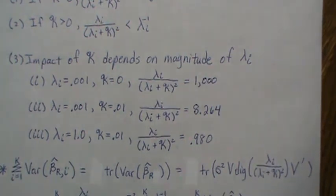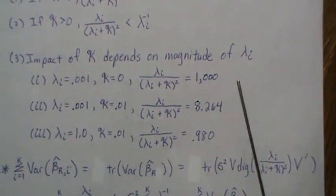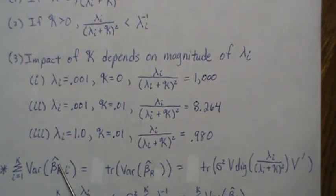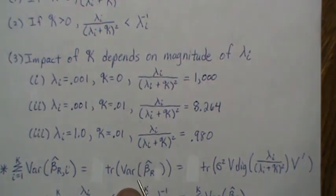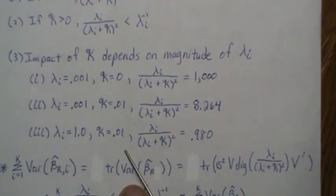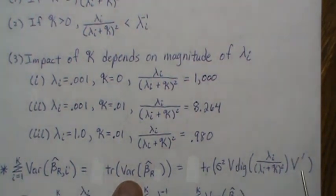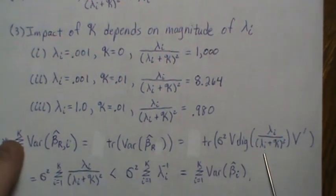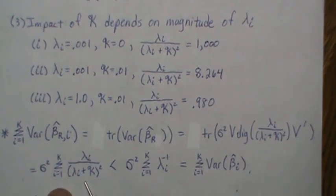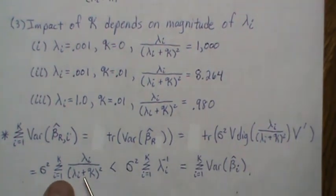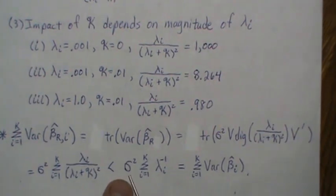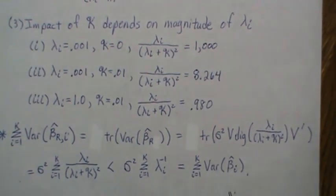To get the total variance of the ridge estimator we take the trace of the variance-covariance matrix — summing the diagonal elements. Since we can cycle V to the back inside the trace, V-transpose V becomes the identity, and we're just taking the trace of a diagonal matrix, which is the sum of diagonal elements. We showed this total variance is always less than the corresponding total variance of the least squares estimate, confirming we've reduced total variance by using ridge regression.